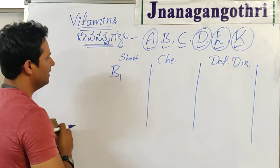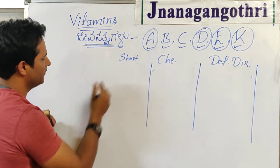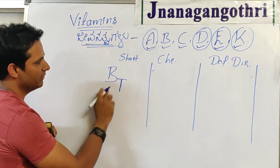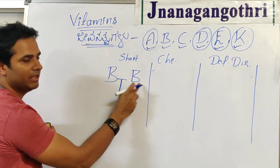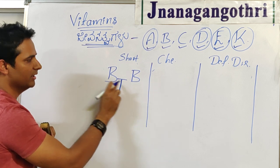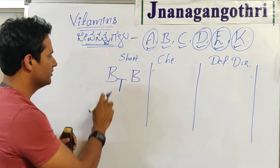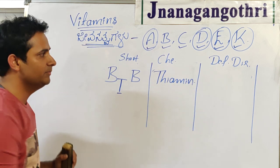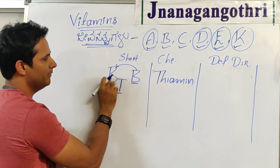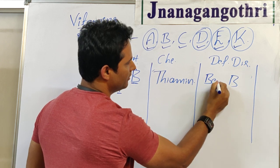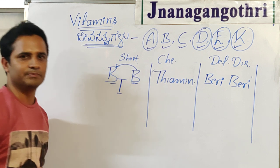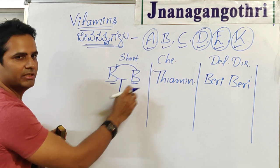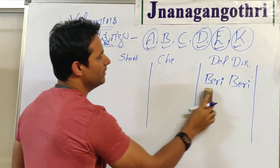For vitamin B1, write B and then add T — it becomes 'BT' like Bt brinjal (or biotechnology brinjal), which was in the news for a long time. T stands for the chemical name Thiamine. The two Bs in 'BT brinjal' remind us of the deficiency disorder: Beriberi. So: B1 → Bt brinjal → Thiamine and Beriberi.